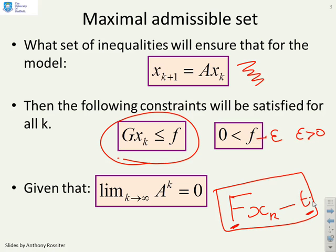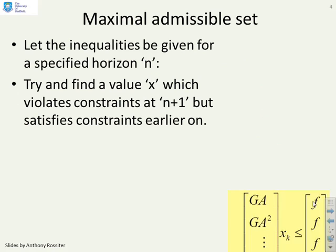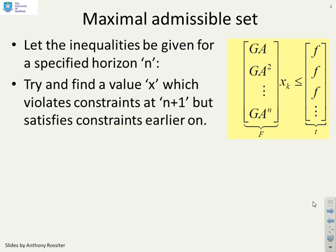In general, this f matrix and this t vector can be written using a finite number of inequalities, where we had GA, GA^2, and so on down to GA^n times xk ≤ f. If we satisfy the sample constraints for the first n samples, then we can ensure that it satisfies them thereafter.